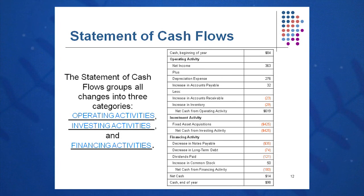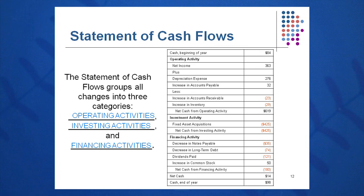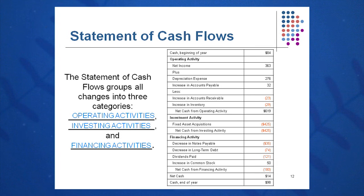We pull these numbers directly off the income statement and the balance sheet, and we end up with a net cash flow of 14. We started last year with 84 — that might be 84 million, so you have to watch your units — and we added 14 this year to show an end-of-year cash flow of 98. This is a very, very important financial statement — the most important financial statement — and one you have to keep your eye on at all times as Chief Financial Officer.